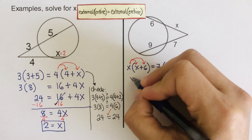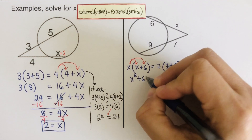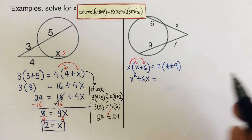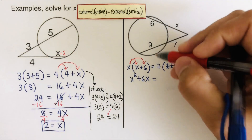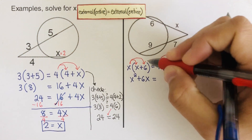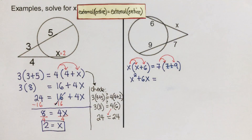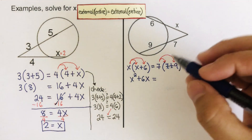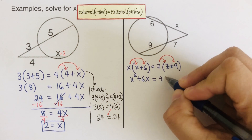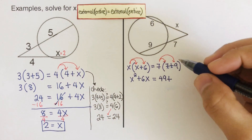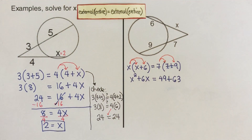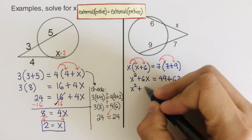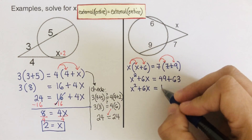We distribute on the left side to get x squared plus 6x. On the right side, we can add 7 plus 9 to get 16, or distribute: 7 times 7 is 49 plus 7 times 9 is 63. Simplified, x squared plus 6x equals 112.